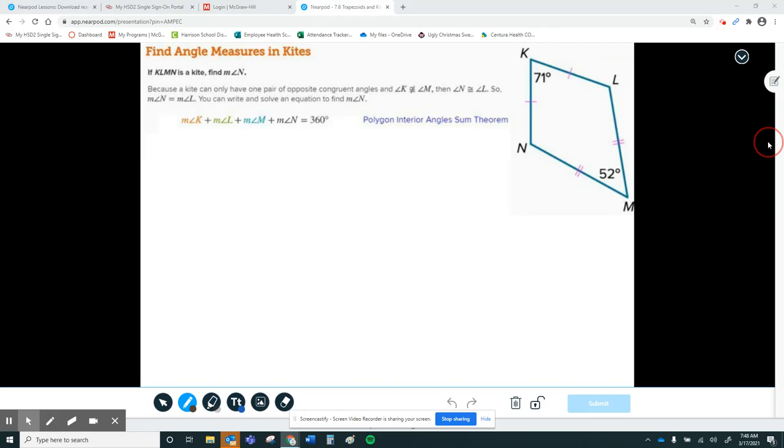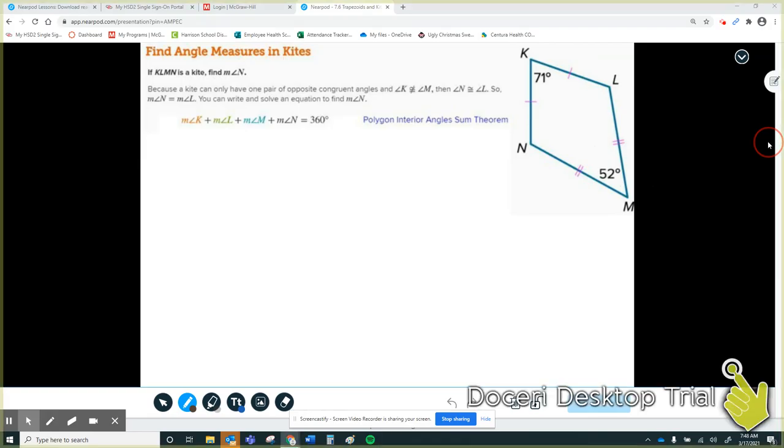The first property that I talked about is that the angles that are in between your two non-congruent sides, I can see the one and two tick marks, so this angle N is going to be the same as this angle L. I don't know what they are, but I know that they're the same.